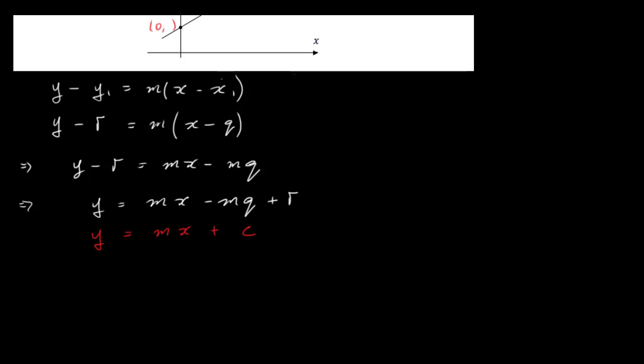So our answer then is, well we can write it as, we put the 0 here and then put R - MQ here. Okay, so that's it. I mean, we'll do it the other way as well. On the Y axis we know that X is equal to 0.